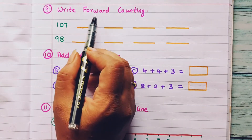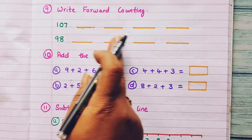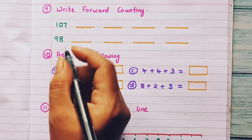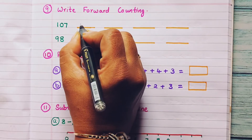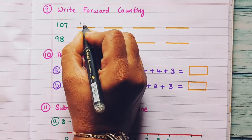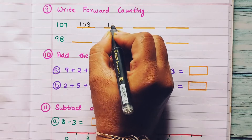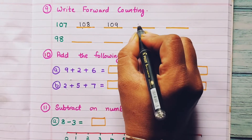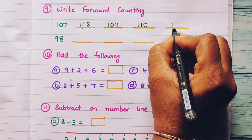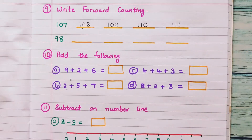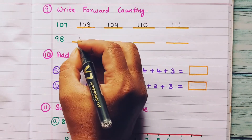Next question: write forward counting — forward counting means we write the next numbers in the series. Starting from 107: 108, 109, 110, 111. Next series starting from 98.